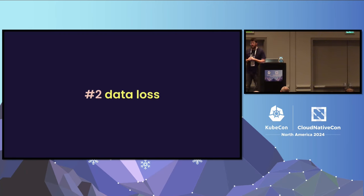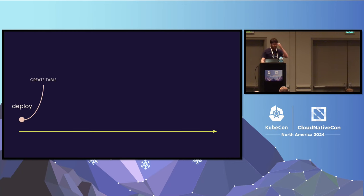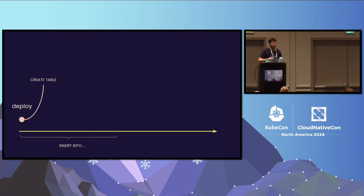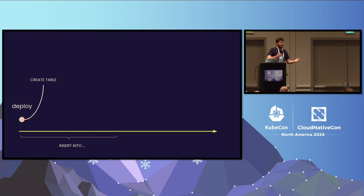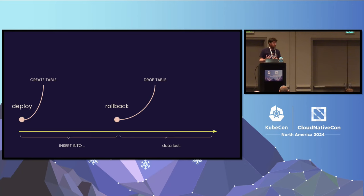Second, down migrations provide an ample opportunity for data loss. The inverse of an additive operation is destructive. Suppose we deploy a migration that creates a table, the application runs for a few hours, and data is written into that new table. We later discover an issue and decide to roll back. The down migration from 'create table' is 'drop table' — meaning all data written in those hours is lost if we naively execute the rollback without considering the table's state.